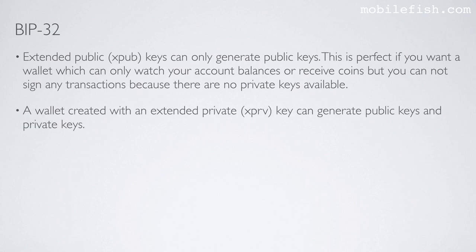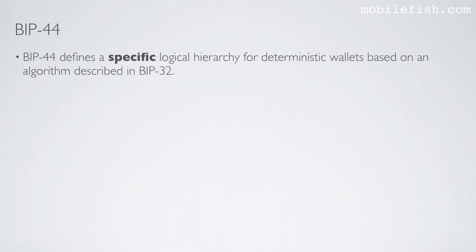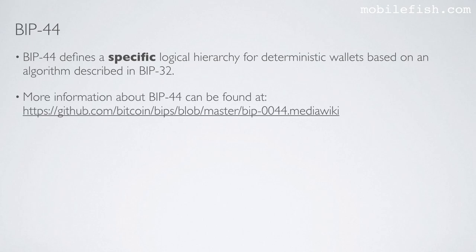Bitcoin Improvement Proposal 44 defines a specific logical hierarchy for deterministic wallets based on an algorithm described in Bitcoin Improvement Proposal 32. More information about Bitcoin Improvement Proposal 44 can be found at this location.